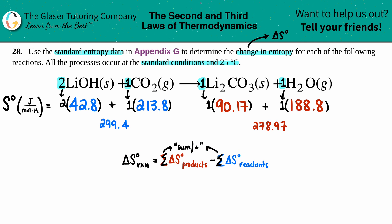So let's now just plug them into our formula. The delta S for the whole entire reaction is products 278.97 minus the reactants which is 299.4.